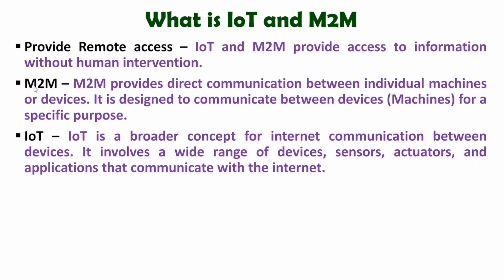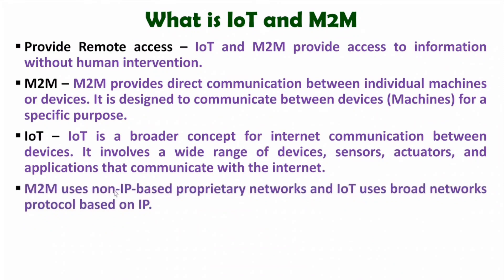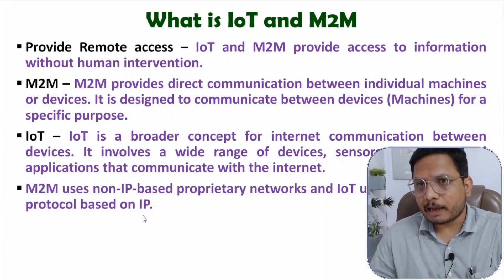Whereas in M2M, devices are also communicating with each other, but its purpose is specific. In M2M we are using the internet too, but the purpose is specific and the network is limited. Whereas in IoT, the purpose is broad, where a variety of devices, sensors, and actuator applications are communicating using the internet. M2M uses non-IP based proprietary networks, although IP-based communication is also possible, whereas in IoT we use broad network protocols based on IP.